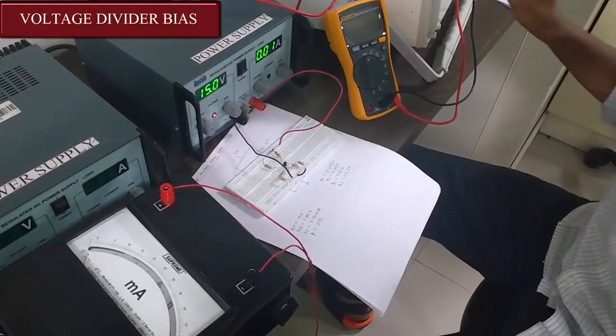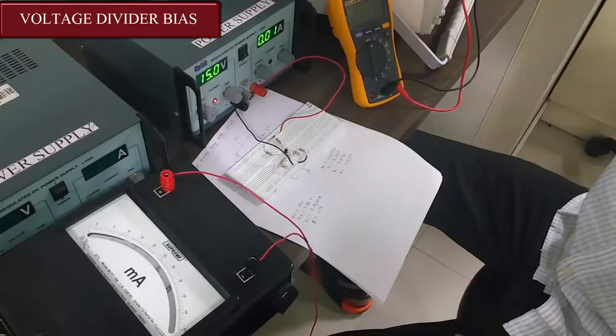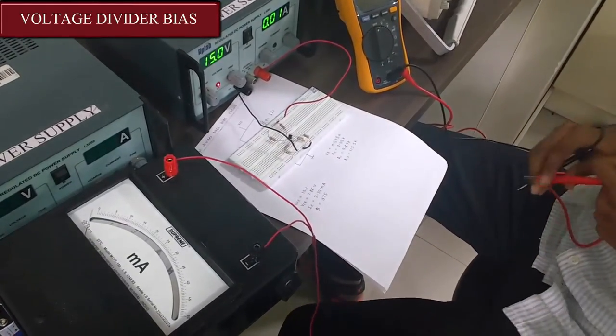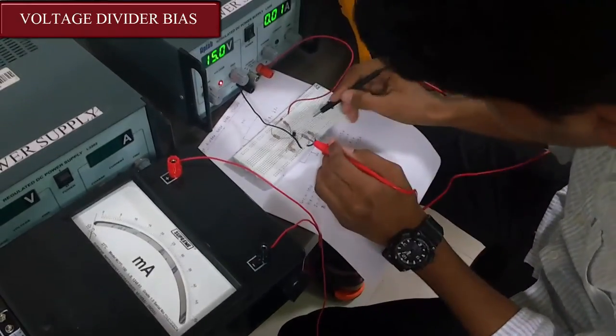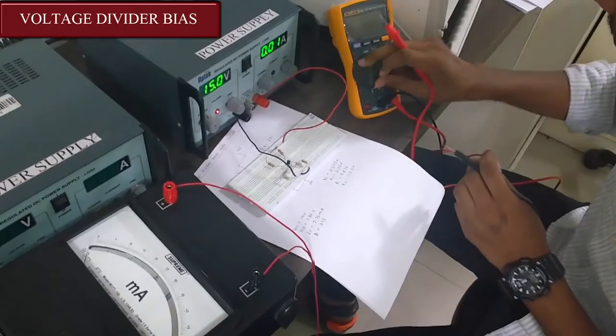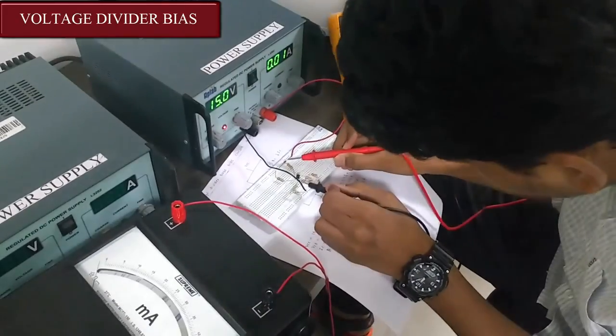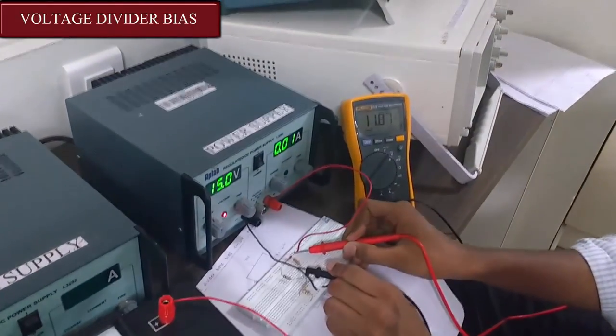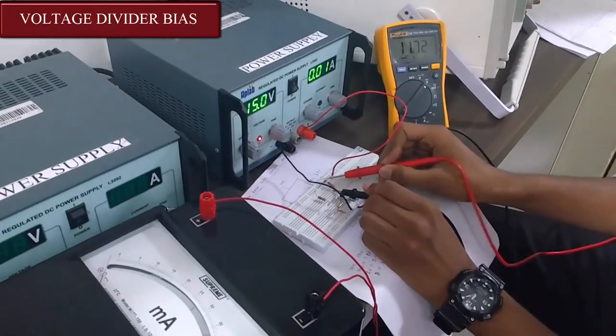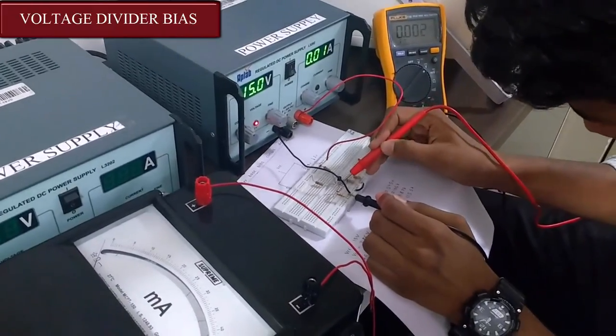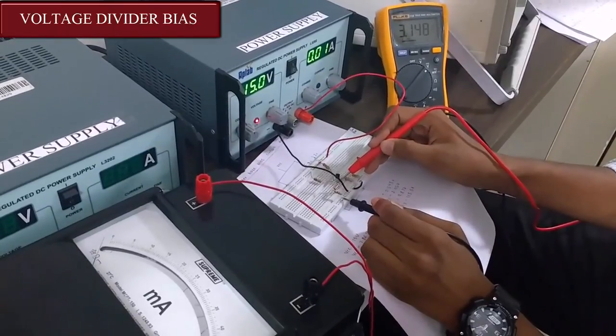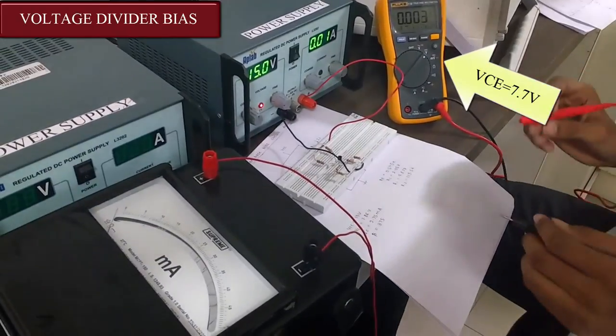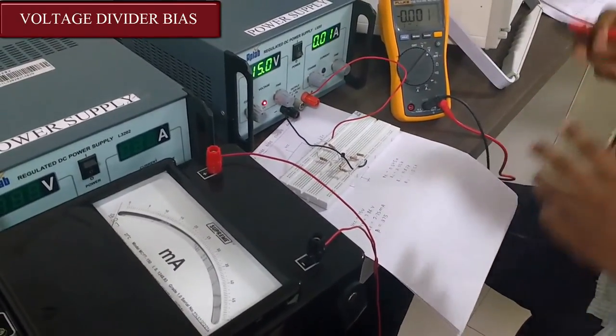Now let us observe the values of VCE and IC. For VCE we will first observe the value of VC and then VE, and VCE = VC - VE. Here we can note that VC value is 11.8 volts and VE is 3.1 volts. That gives us VCE as 7.7 volts, which is close to our given value. Now let us calculate IC.